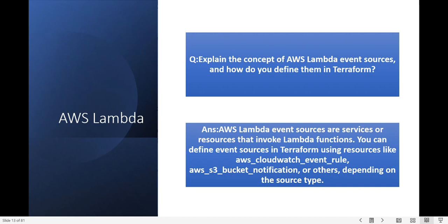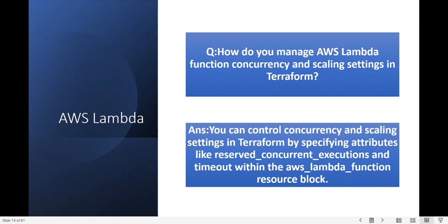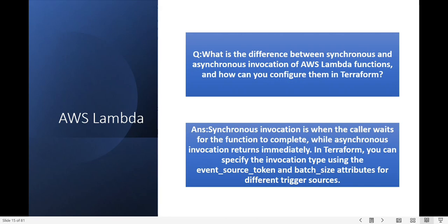If you are trying to invoke your Lambda function on a schedule, you can use the aws_cloudwatch_event_rule resource in Terraform. Next question: how do you manage AWS Lambda function concurrency and scaling settings in Terraform? You can control concurrency and scaling settings in Terraform using attributes like reserved_concurrent_executions and timeout within the AWS Lambda function resource block.